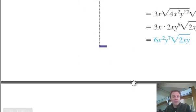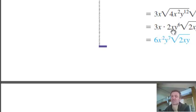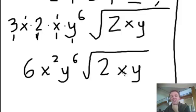Let me just check that against the book. What on earth have they done? There's a huge mistake there — look at the book here, they've got y⁷ in the answer. It should be y⁶. I don't see any y's outside that would make it y⁷ — that must be a typo. Just go off what I did.